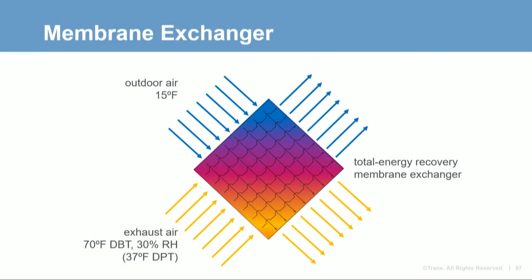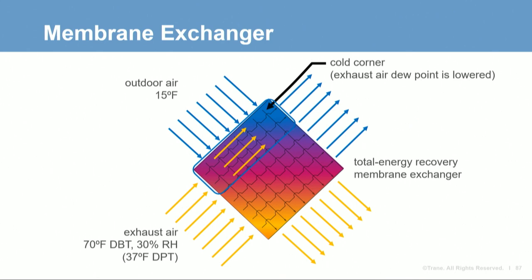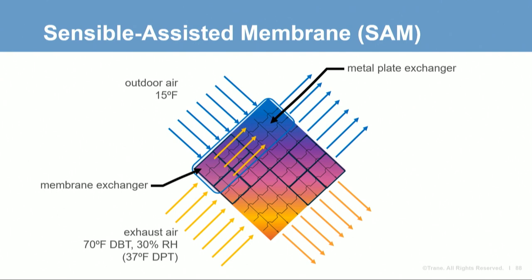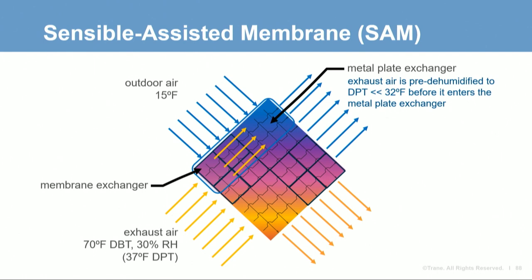Metal plate exchangers will require some means to reduce capacity to prevent ice formation. Some manufacturers add a frost avoidance damper to divert outdoor air away from the cold corner when ice may occur. A membrane exchanger is different: as the exhaust air is cooled while passing through the membrane, water vapor is also being removed and transferred to the outdoor airstream, reducing the dew point of the exhaust air and removing the risk of liquid condensate turning to ice.